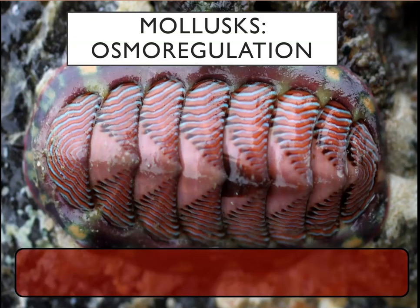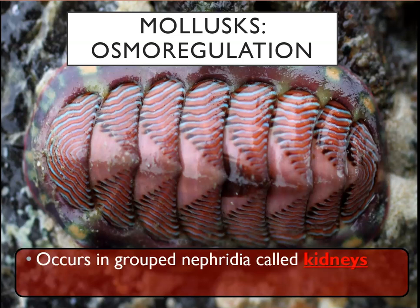Osmoregulation — regulating water, salt, and waste excretion — comes down to kidneys. Kidneys are groups of nephridia, essentially complex tubes. Nephridia and metanephridia are essentially the same thing. Nephridia are the precursor to kidneys, and human kidneys are really just many, many nephridia clustered into one organ. The function of the kidneys is largely to filter the coelomic fluid — the hemocoel fluid in most mollusks, or the blood in veins and arteries in cephalopods — and keep it relatively clean.